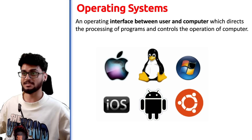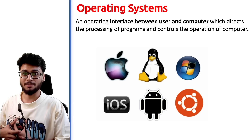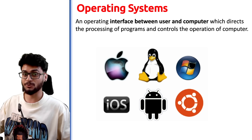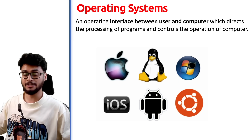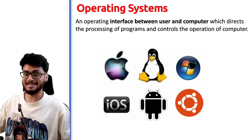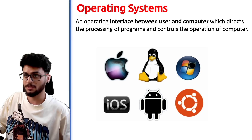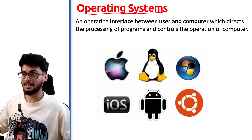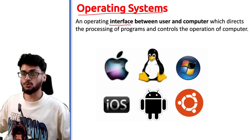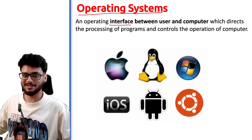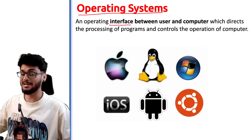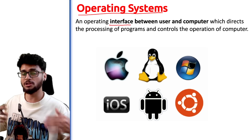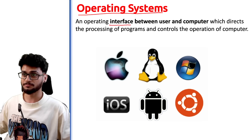What is an operating system? If you have an electronic device like a mobile phone, iPad, or a computer system, there are two things to notice: first is the hardware — the things you can touch, like your keyboard, screen, and speakers. But there is something else present inside those hardware components, which is known as the operating system. The operating system acts as an interface between the user and the computer.